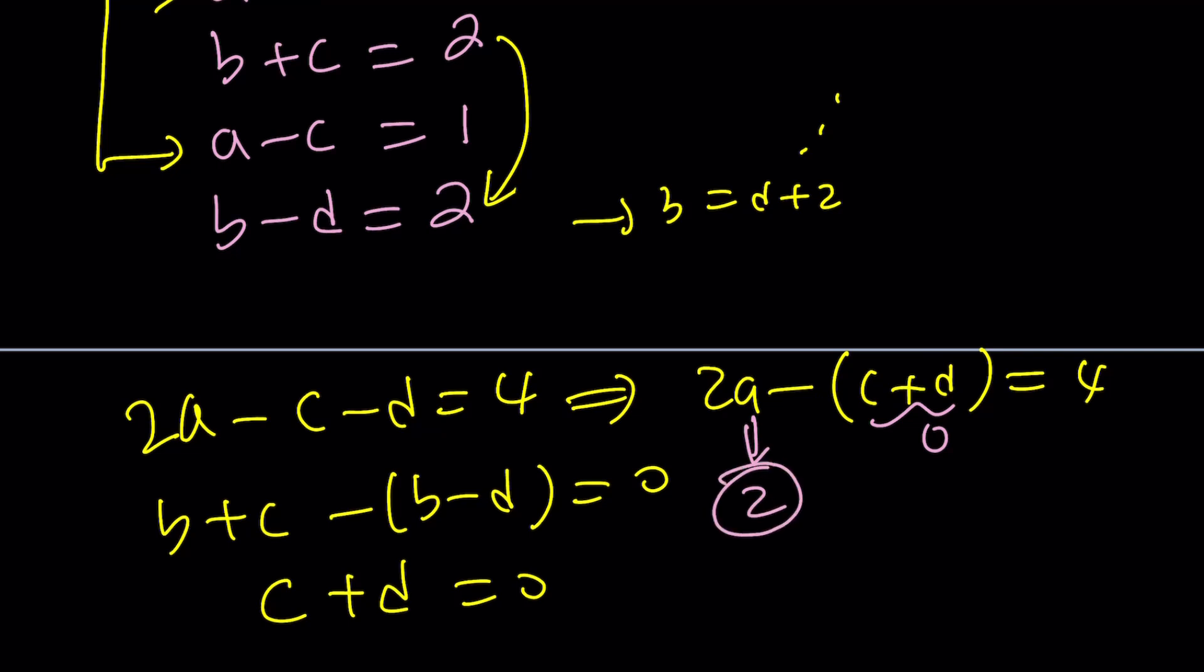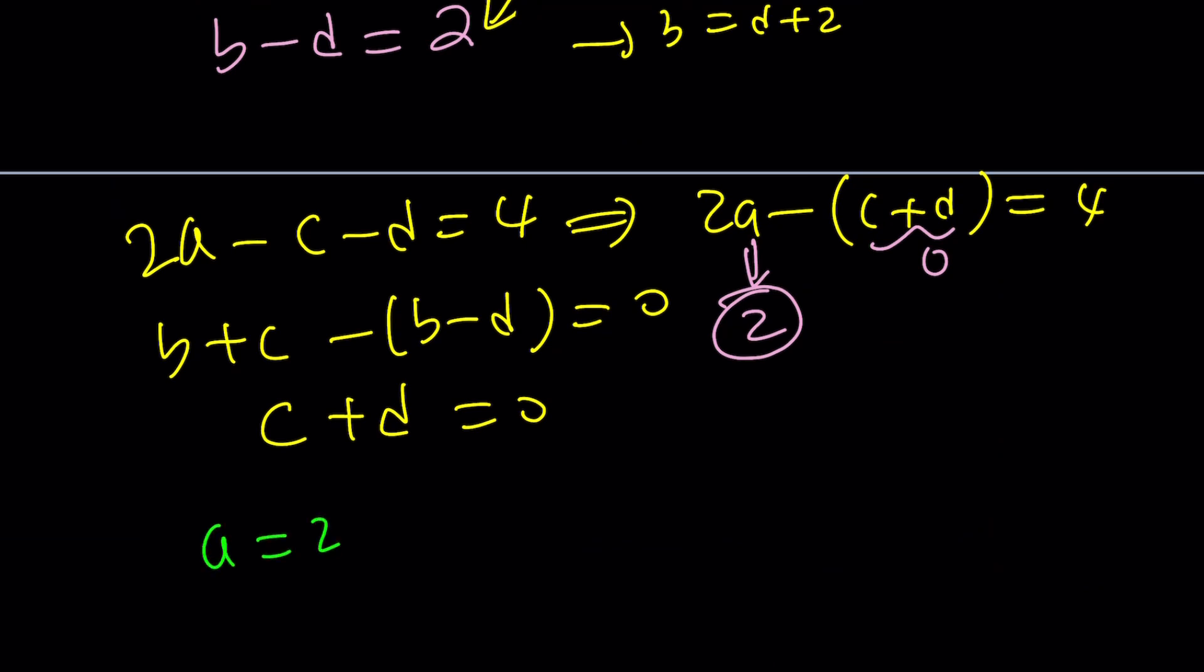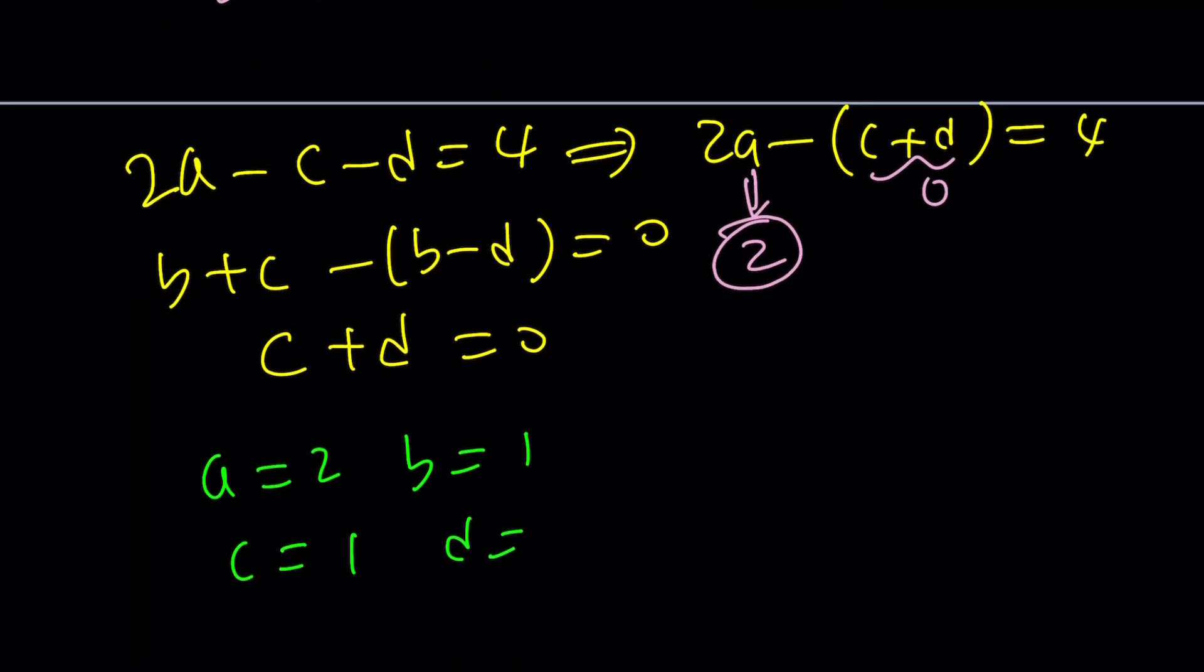Once you find a, hopefully you're going to find everything because it's just going to unfold real quick. If a is 2, then d must be negative 1. If a is 2, c must be 1. If c is 1, b is 1. Make sense? Okay, great. So, we have a equals 2, b equals 1, c equals 1, and d equals negative 1.